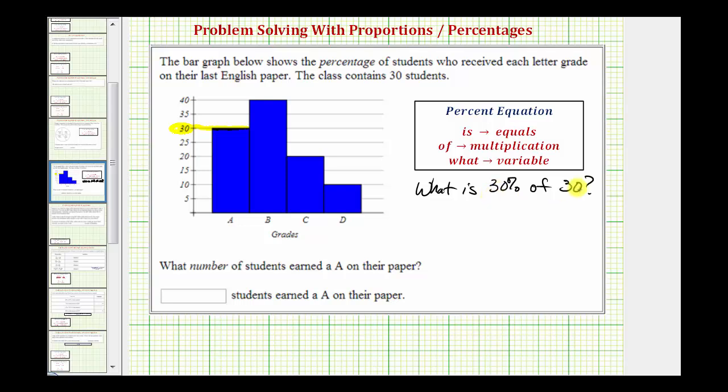Whenever we're trying to determine the percent of a number, the quickest, easiest way is to convert the percent to a decimal and multiply. So 30 percent as a decimal would be 0.30. Of course we can drop the 0 here in the hundredths and just write it as 0.3.